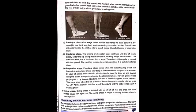Regarding upper body and arm mechanics in running, the interaction between the upper body and lower body plays a significant role. Upper body action provides balance and promotes efficient movement. Balance is maintained by the arms and the upper body efficiently working in the opposite direction — the opposition principle.